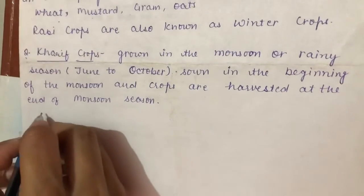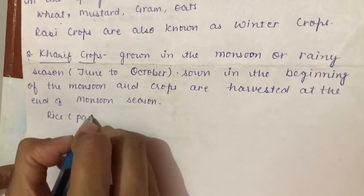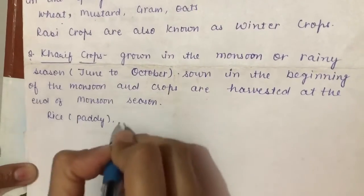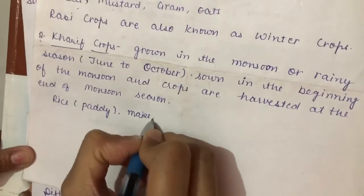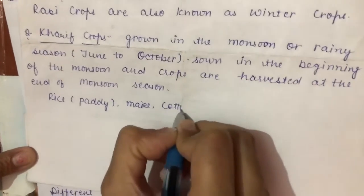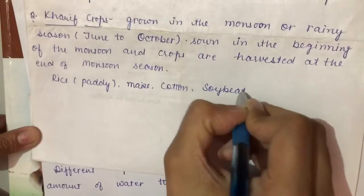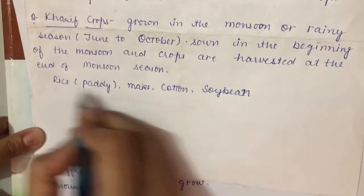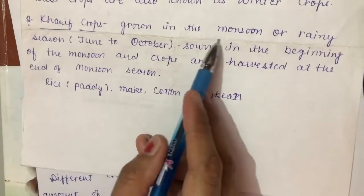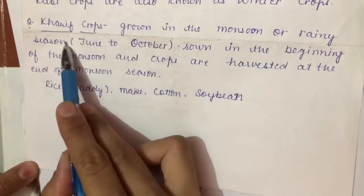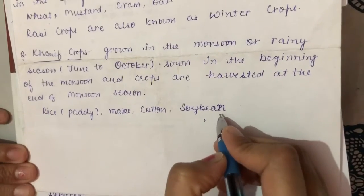As you all know, rice — also known as paddy — maize, cotton, and soybean are crops that need a large amount of water to grow. That's why these are grown in the monsoon or rainy season, and these are your Kharif crops. Thank you and have a nice day.